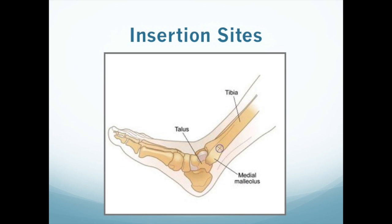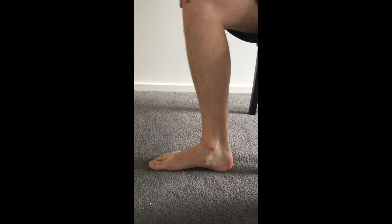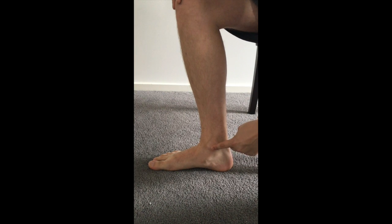The distal tibia is a very easy landmark to find, but is the most distant insertion point, meaning any drugs administered will take longer to circulate. It's located approximately three centimeters proximal to the most prominent point of the medial malleolus.